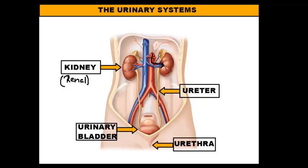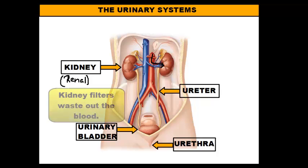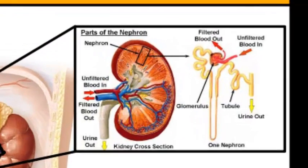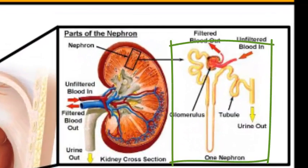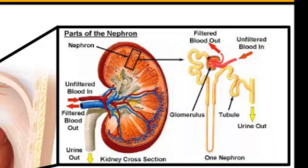The renal artery brings blood into the kidney, and then the kidney filters it out using microscopic filters called nephrons. Your kidney is filled with tons of these nephrons, because your blood is constantly being pumped into your kidney. You need a lot of filters cleaning out all that blood to remove as much waste as possible. The nephrons are the structures that produce urine.